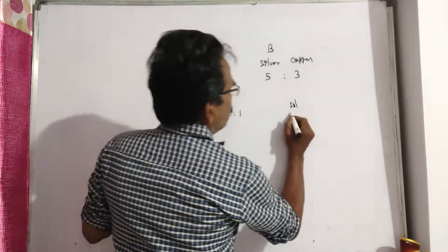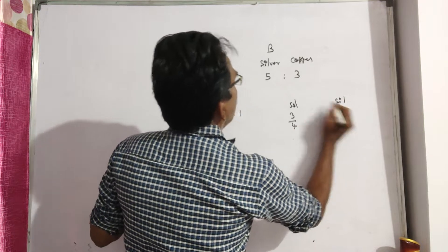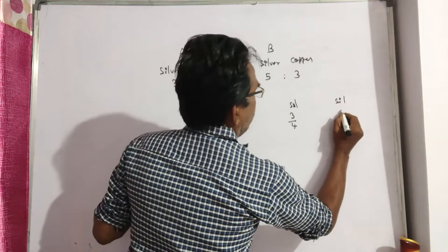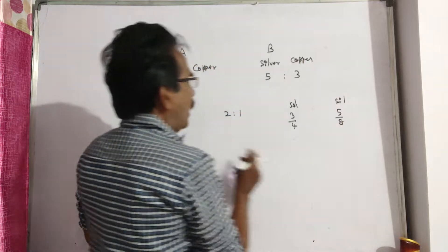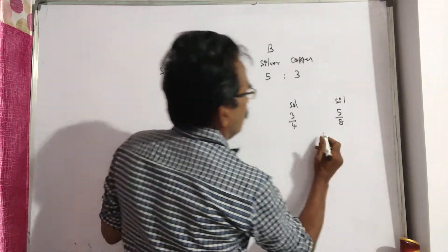See, silver is 3/4 here. Here silver is 5 by 5 plus 3, 5/8, and in the resultant alloy, the silver must be 2 by 2 plus 1, 2/3.